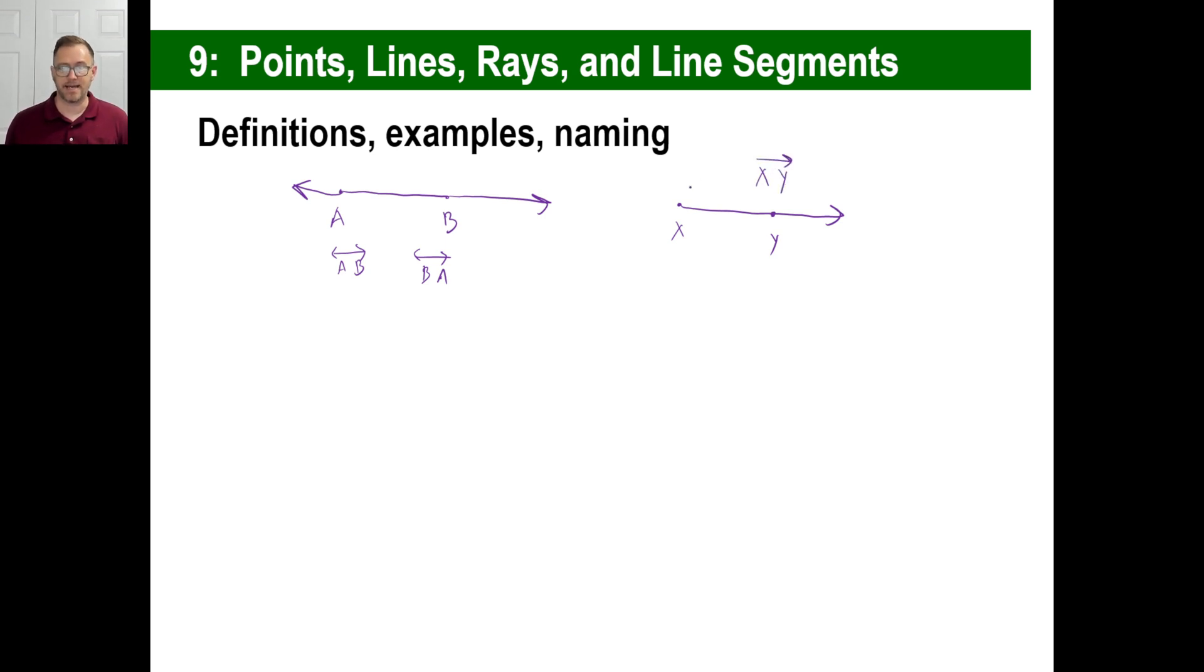A line segment is, like if you were to say line segment X, Y, you'd put it like this. And the difference between this and this is that this has an actual length, and it stops. Including point X and point Y, it stops right there. Of course, you could also name this, if you wanted to, line segment Y, X, and so on. So that's fine, all right?